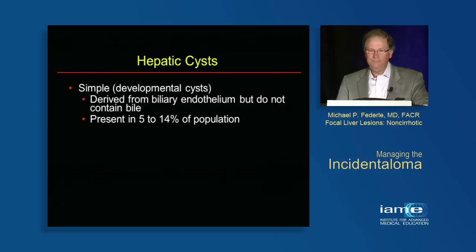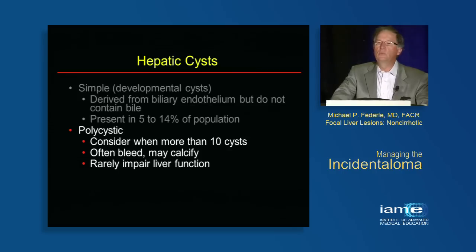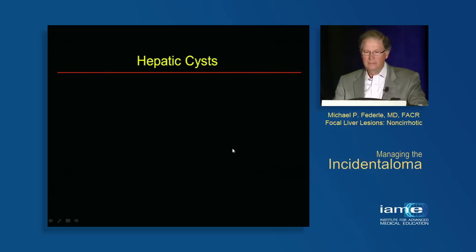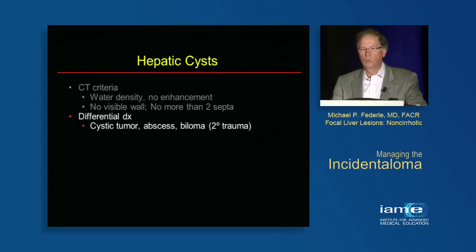Let's talk about hepatic cysts. These are extremely common, derived from biliary endothelium, but they don't contain bile nor communicate with the biliary tree. Polycystic disease should be considered in patients with more than 10 cysts, though the number is fairly irrelevant — I've seen many patients with numerous simple hepatic cysts. Diagnostic criteria include water density, no enhancement, and no visible wall. It's okay to have a couple of thin septa; that doesn't make it worrisome or neoplastic.